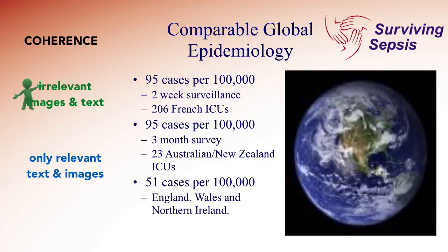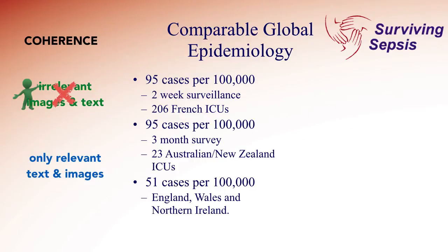The next principle is called the coherence principle. What this says is that irrelevant images and text actually distract you from learning. So in this image here, there's a picture of the earth, which really has nothing to do with the incidence of sepsis, and so it only serves as a distractor. So we remove it.